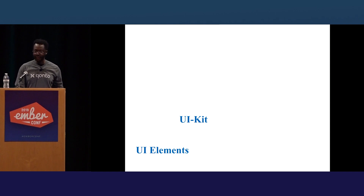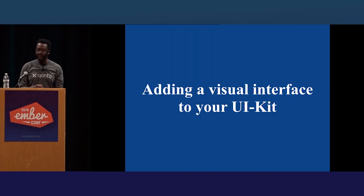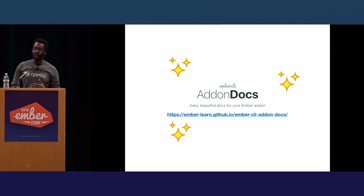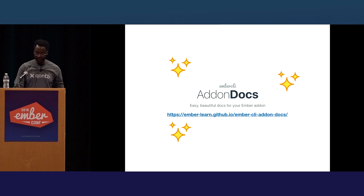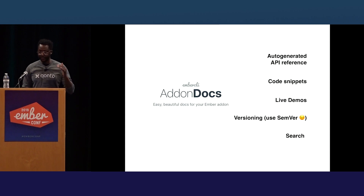So do we have a UI kit yet? No, we don't have a visual way to see our components. We've added them all to our add-on, but we cannot see them. Ember helps again. I introduce Ember CLI Add-on Docs — an add-on you might have heard about — that I really like, I think it's really useful. Once you install it, you get these features.